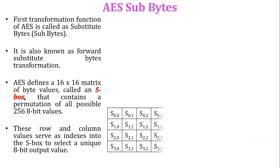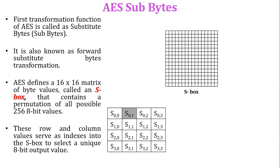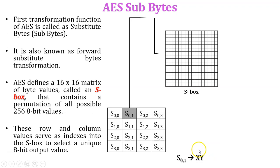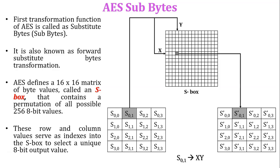For example, I have a plain text matrix. From this plain text matrix, I want to map each value into the S-Box. For example, the element S01 has value XY, where X indicates the row and Y indicates the column in the S-Box. When this row and column intersect, it gives a new value, and that new value replaces the S01 element in the matrix. This process is called substitute bytes in AES.